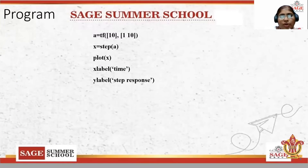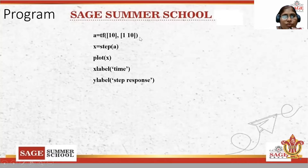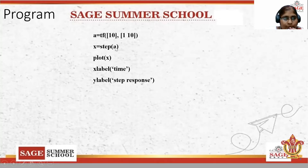Now see the MATLAB program. The 'tf' function is used to define a transfer function. Within parentheses, write the coefficients of the numerator and then the denominator. Here, 10 is the coefficient of the numerator and [1, 10] are the coefficients of the denominator. Then X = step(a) calculates the step response values for this transfer function, followed by plotting and axis labeling.